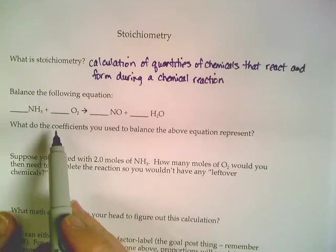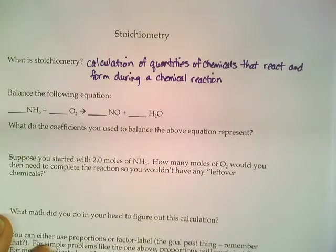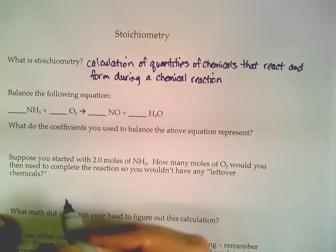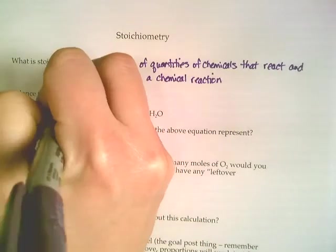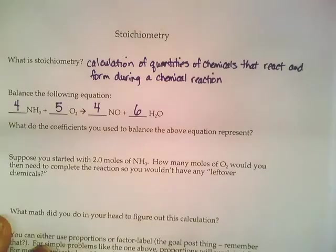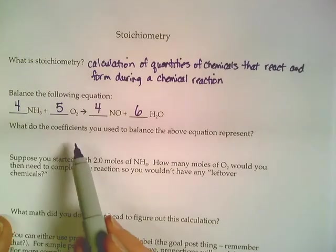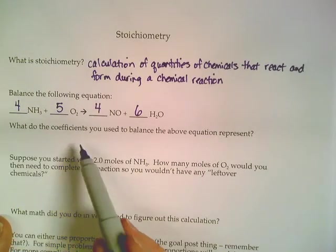So for reactions, there's a little bit of balancing involved. So if I told you to balance this, I'll help you out here. It would be 4, 5, 4, 6 to get this to balance. So those numbers, where we have 4NH3 and 5O2, what those numbers mean,